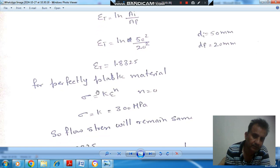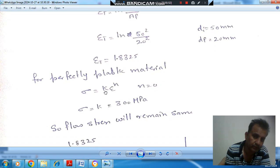For perfectly plastic material, the flow-stress relationship is σ = K × ε^N. For perfectly plastic material, N is 0, where K is yield strength and σ is flow stress. So it means flow stress will remain same throughout.